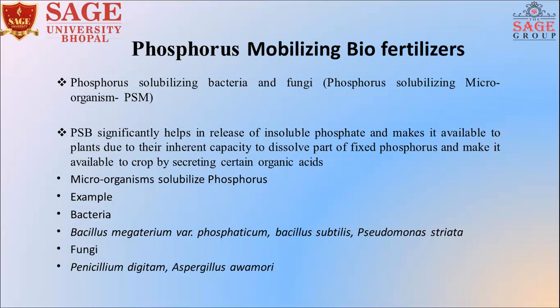We call these PSM — phosphorus solubilizing microorganisms. They significantly help in the release of insoluble phosphate and make it available to plants due to their inherent capacity to dissolve fixed phosphorus and make it available to the crop by secreting certain organic acids.